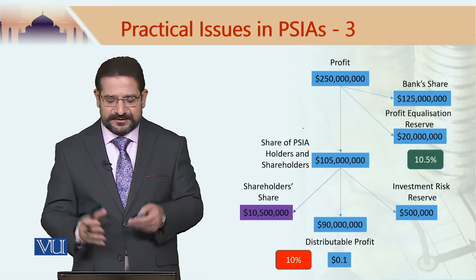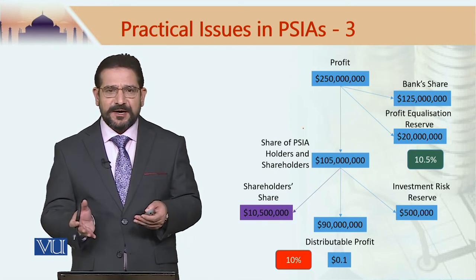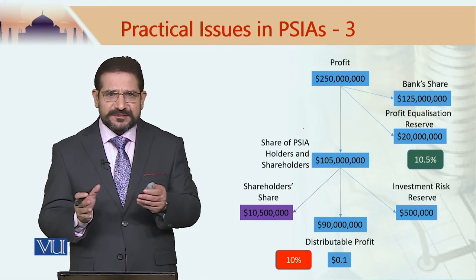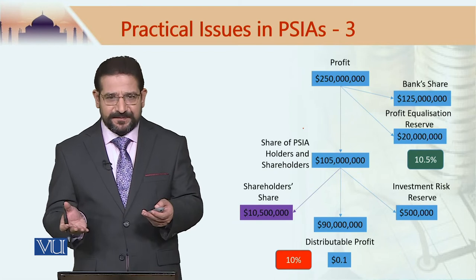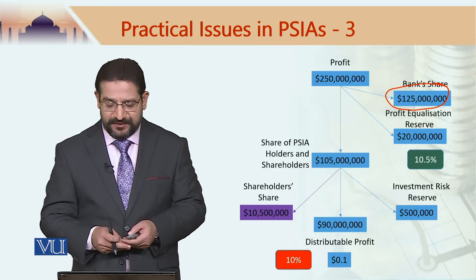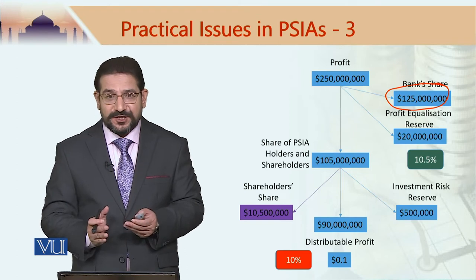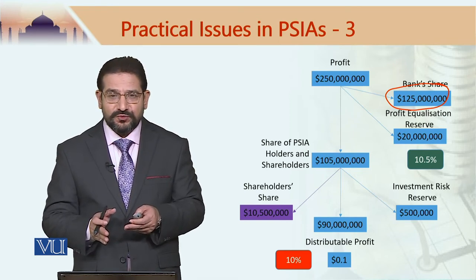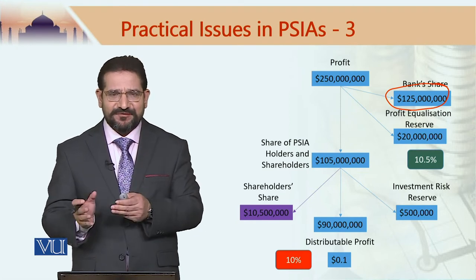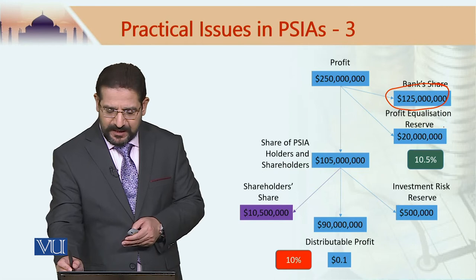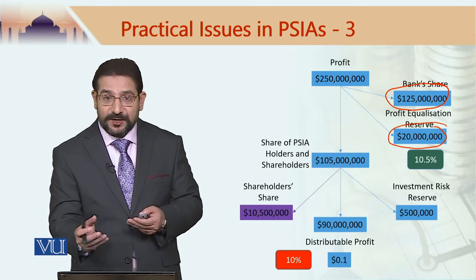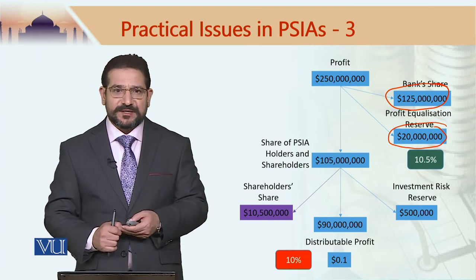The total profit generated by the business activities financed by the Mudarabha pool is 250 million. The profit distribution ratio in this case is 50-50, meaning the bank would get 125 million out of this 250 million, and the remaining profit share should go to those who contributed to the Mudarabha pool. However, banks would like to create a buffer. In this case, 20 million out of the 125 million share of the Mudarabha pool contributors would go into the profit equalization reserve.